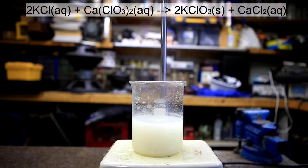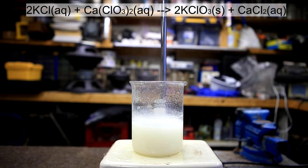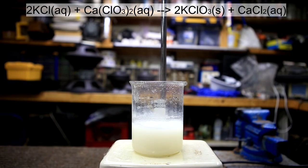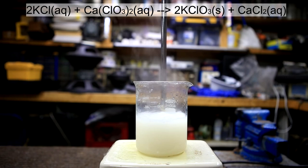The reaction occurring is a double displacement reaction. Potassium chloride reacts with calcium chlorate to produce potassium chlorate and calcium chloride. The potassium chlorate is quite insoluble in water and as the solution cools it will precipitate out.